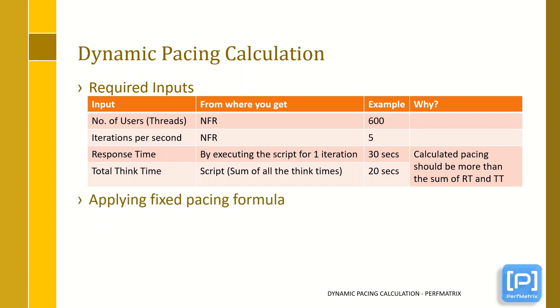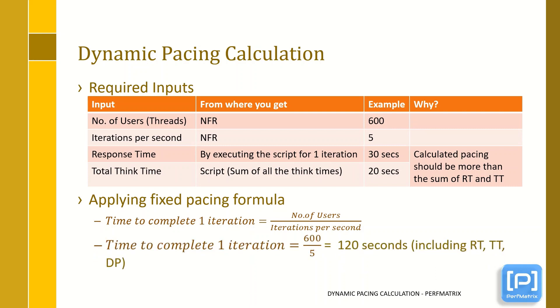Now, put the number of users and iterations per second values in the formula and calculate the time taken by one iteration. Here we got 120 seconds value in which an iteration must be completed, which includes the sum of response time of all the requests, total think time, and dynamic pacing.